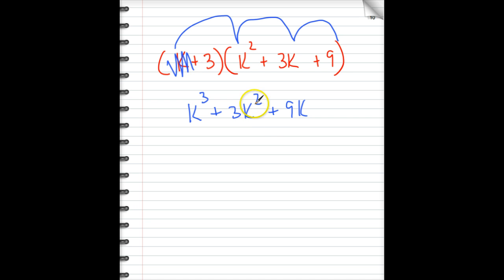3 times k², that's another 3k². I'm going to line it up like this so the k squareds are aligned. 3 times 3k, 9k. And then finally, 3 times 9, 27.